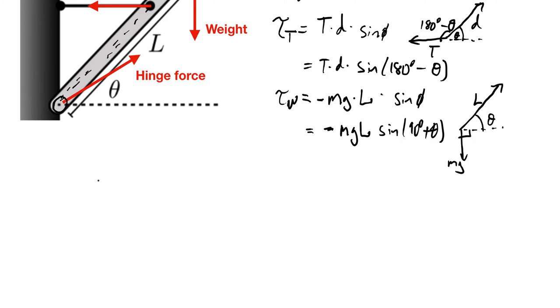I just go ahead and say that the sum of the torques is known to be zero because it's static. And that's T times D times the sine of 180 degrees minus theta minus mgL times the sine of 90 degrees plus theta.